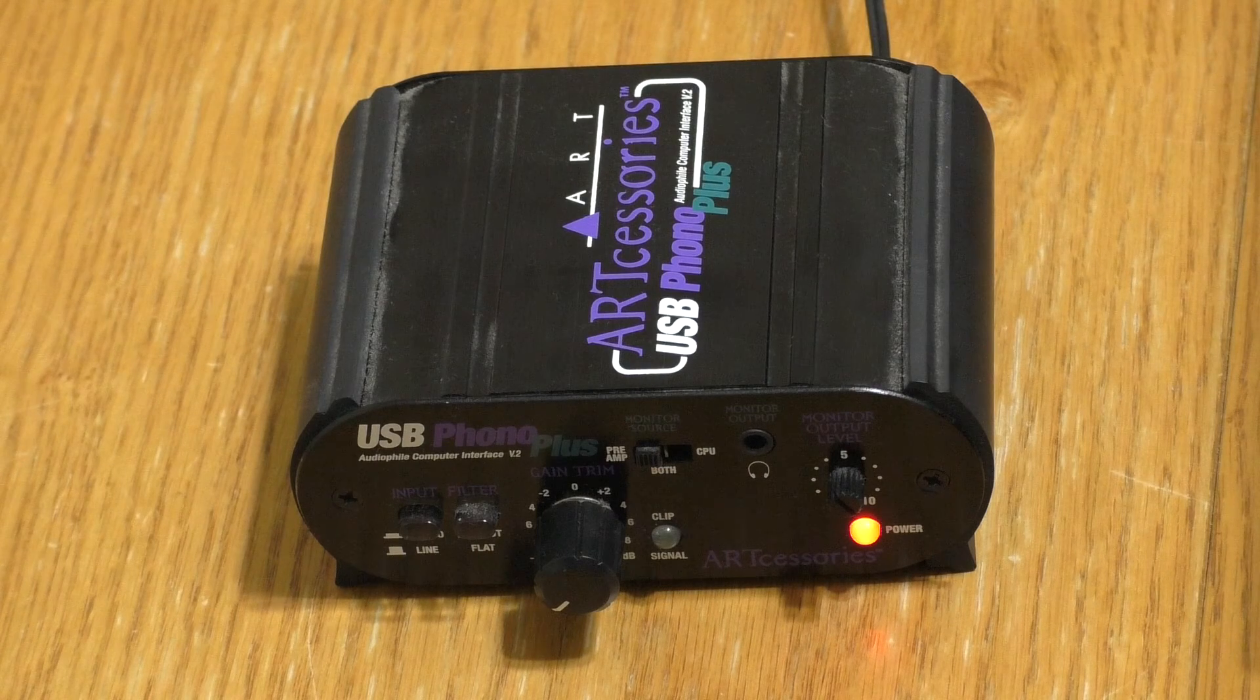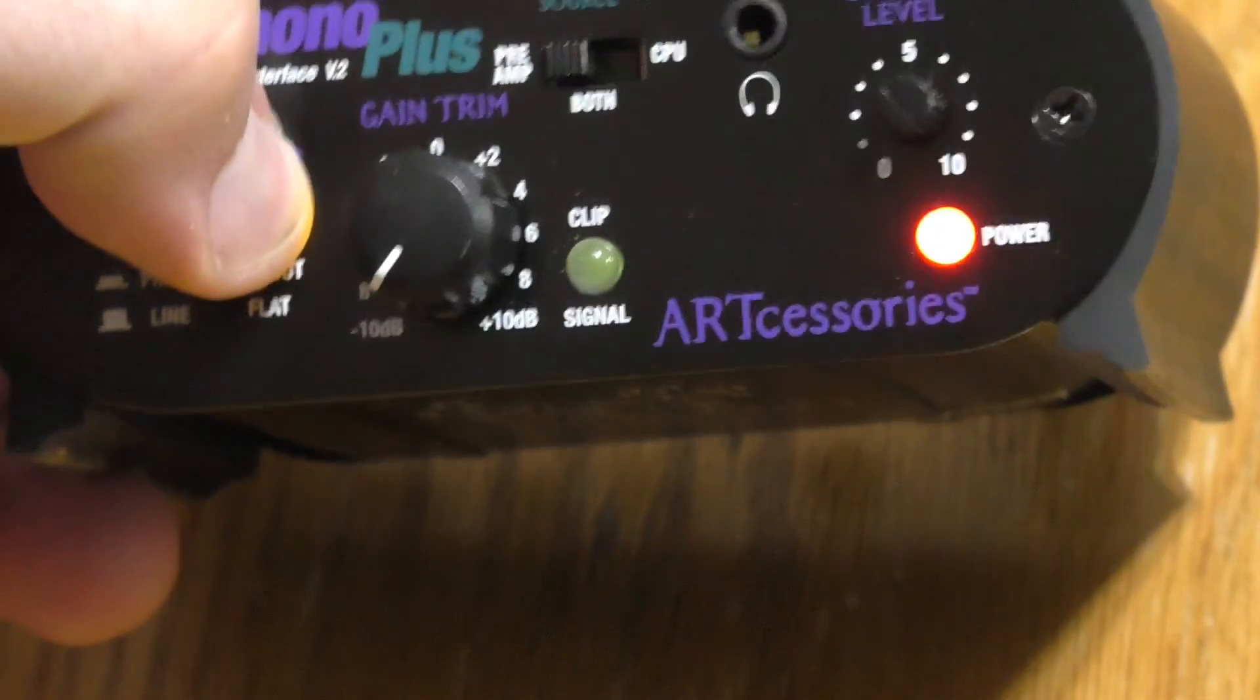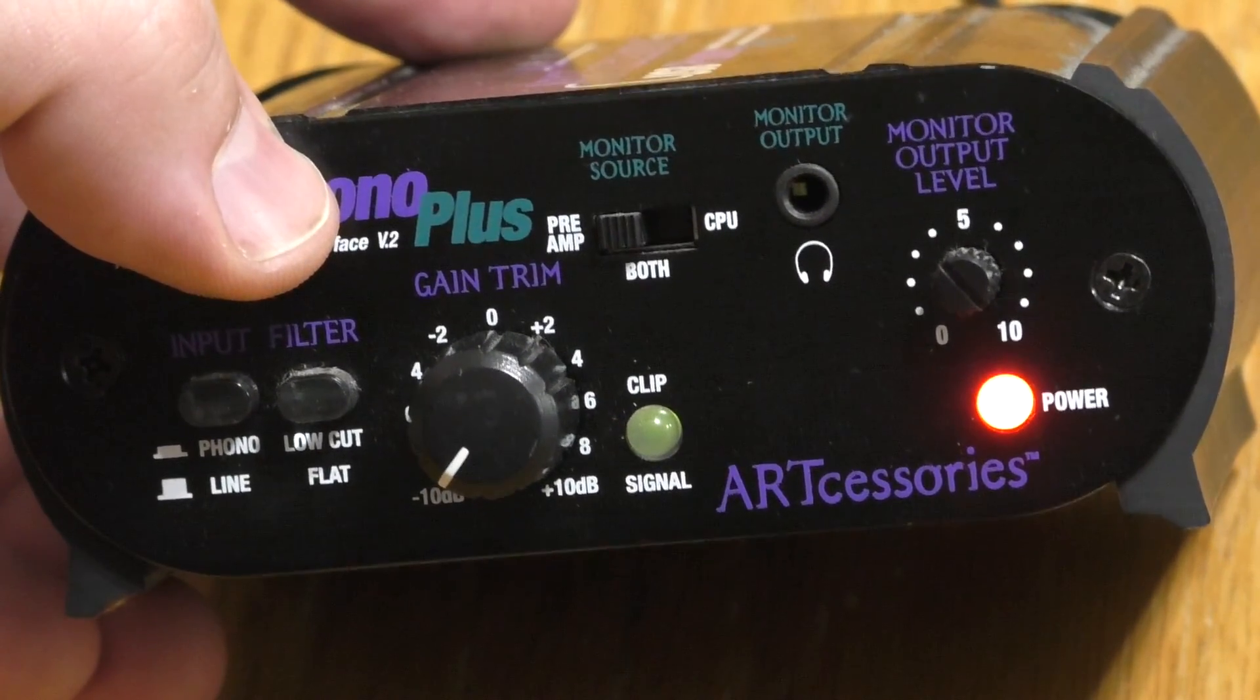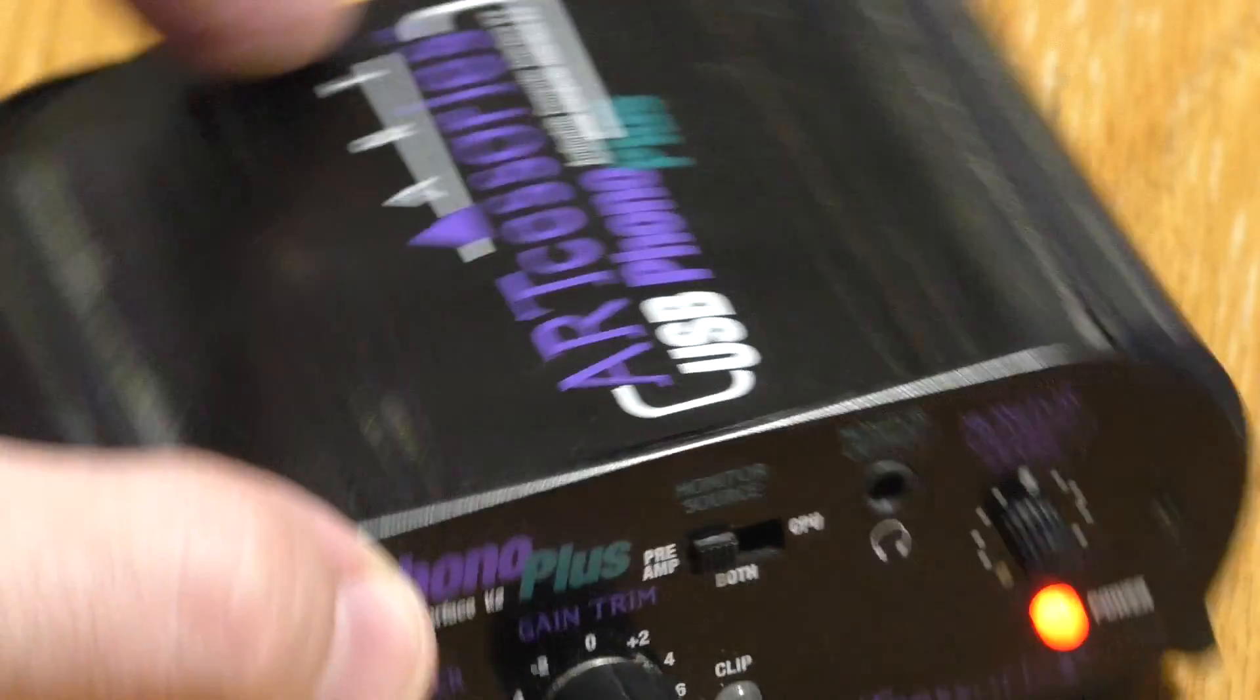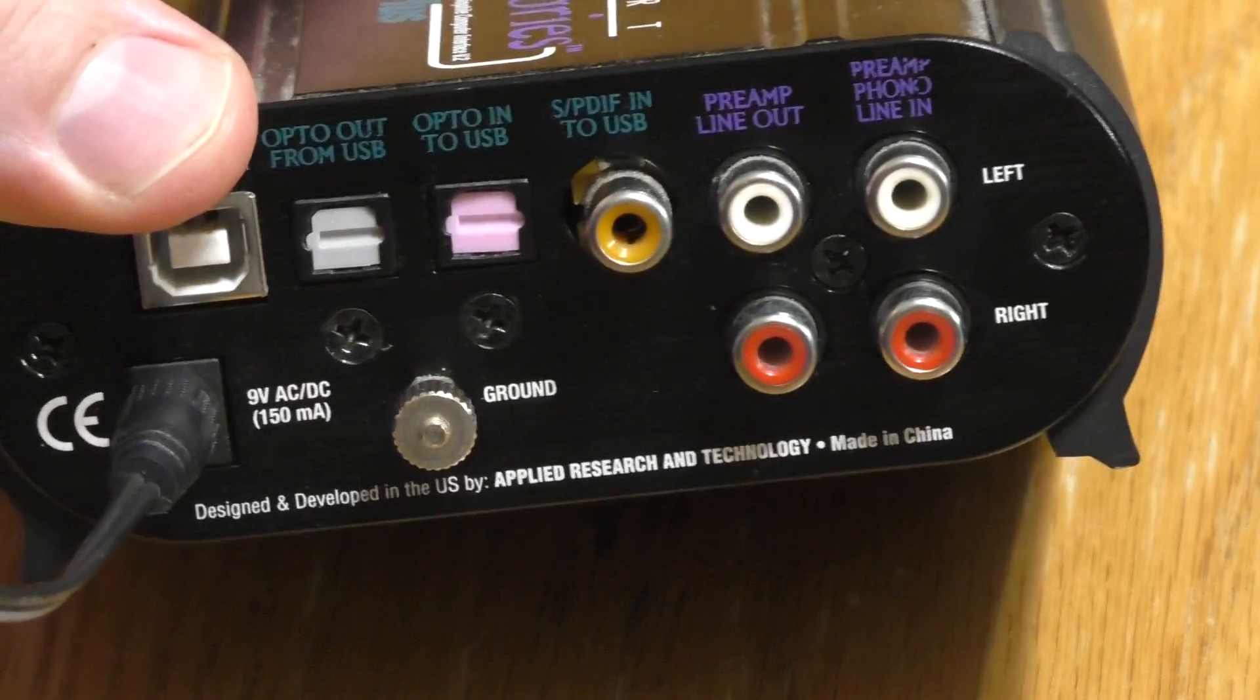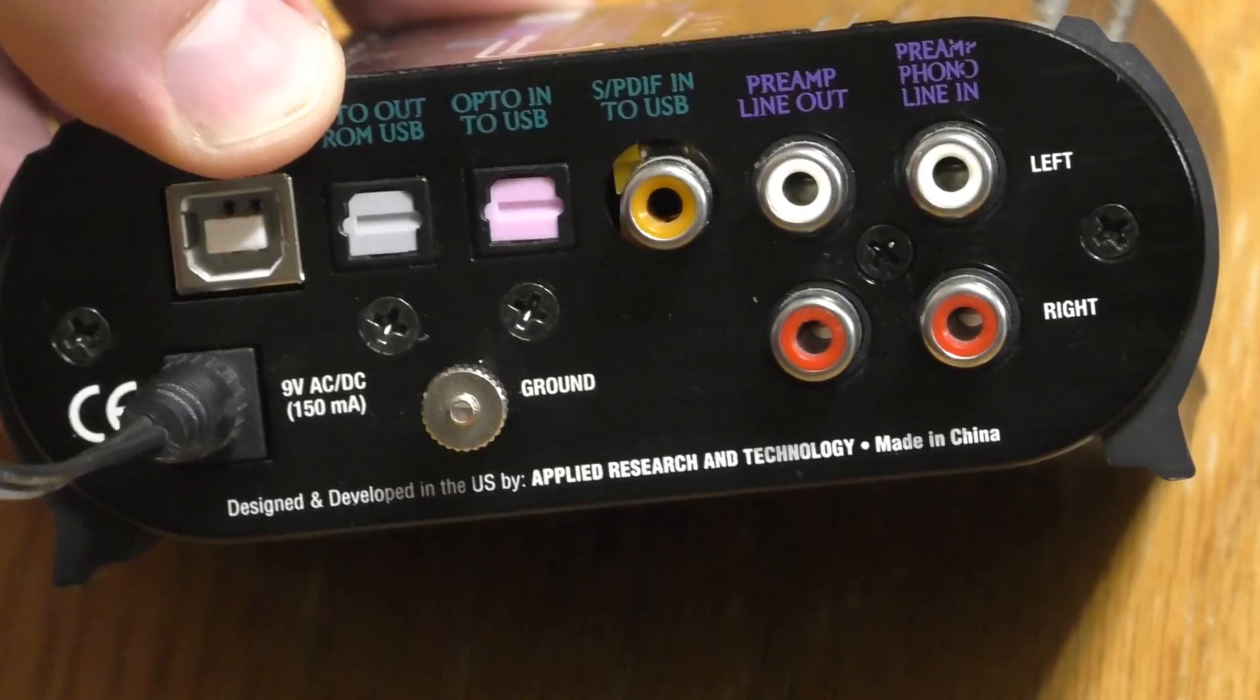I opted for an Arccessories USB Phono Plus. All phono preamps convert a phono level signal into a line level signal, but this unit also has optical and coax digital outputs, a USB output for hooking up to a computer, as well as a headphone jack for monitoring.